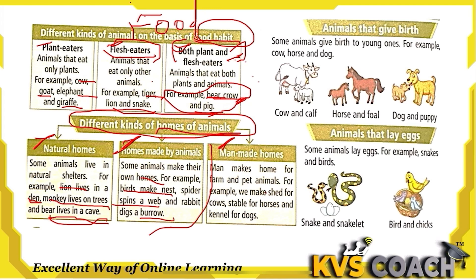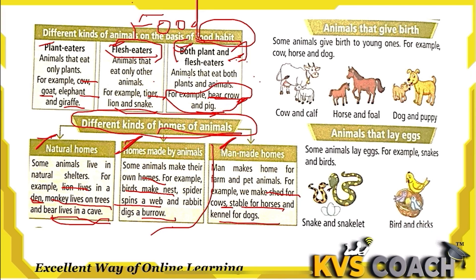The third type is man-made homes. Men make homes for pet animals — shed for cows, stable for horses, and kennel for dogs. So animal homes are of three types: natural, made by animals themselves, and man-made.